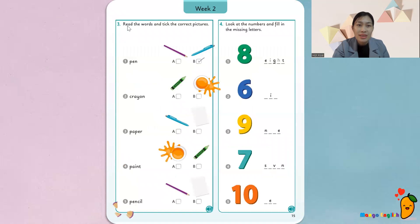Part three. Read the words and take the correct pictures. Read là đọc, words là đọc từ. À, bài này người ta cho từ sẵn và cho hai hình để mình lựa chọn. Ví dụ,